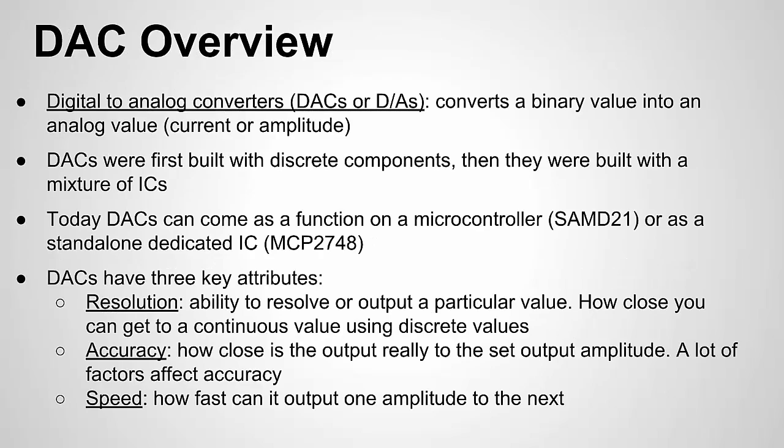Let's dive into an overview on DACs, or digital-to-analog converters, sometimes referred to as D-to-A's. A DAC is sort of the opposite of an ADC. An ADC takes an analog signal, measures it, and converts it into a representative binary or digital value. A DAC takes a binary value and converts it into an analog value — that could be current or voltage. For this video, I'll talk in terms of amplitude and voltage.